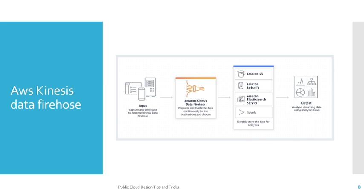AWS Kinesis Data Firehose is the easiest way to capture, transform, and load data streams into AWS data stores for near real time analytics with existing business intelligence tools. As you can see here, data is captured from input sources and Firehose prepares and loads the data continuously to your chosen destination. Destinations can be Amazon S3, Amazon Redshift, or Amazon Elasticsearch. From those destinations, Power BI or other BI tools can retrieve the data and represent it in graphical or other formats for your customers.